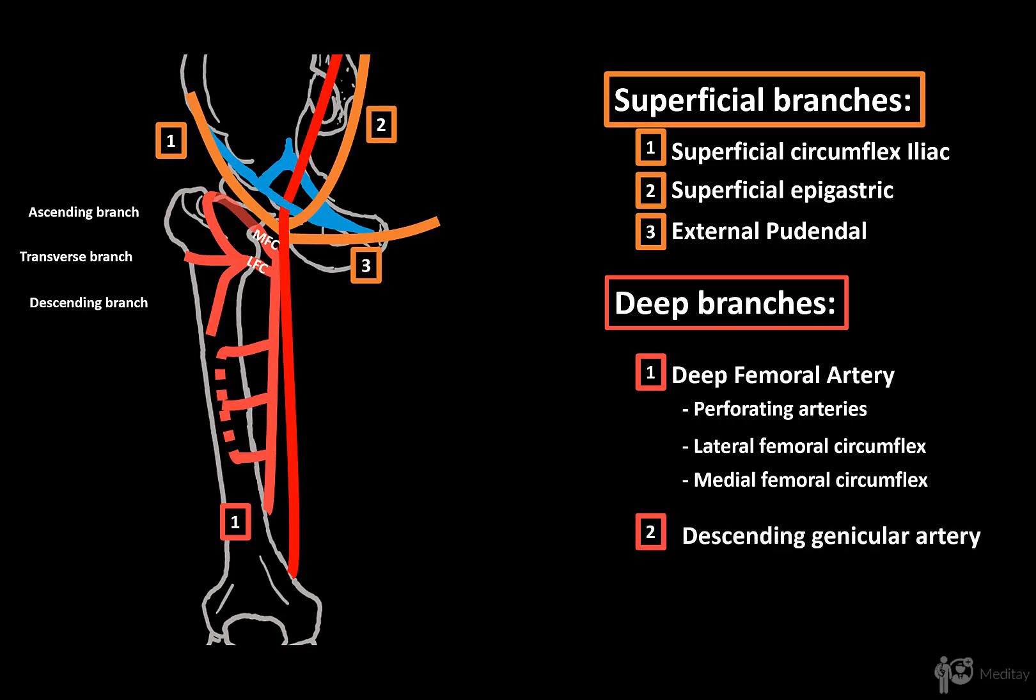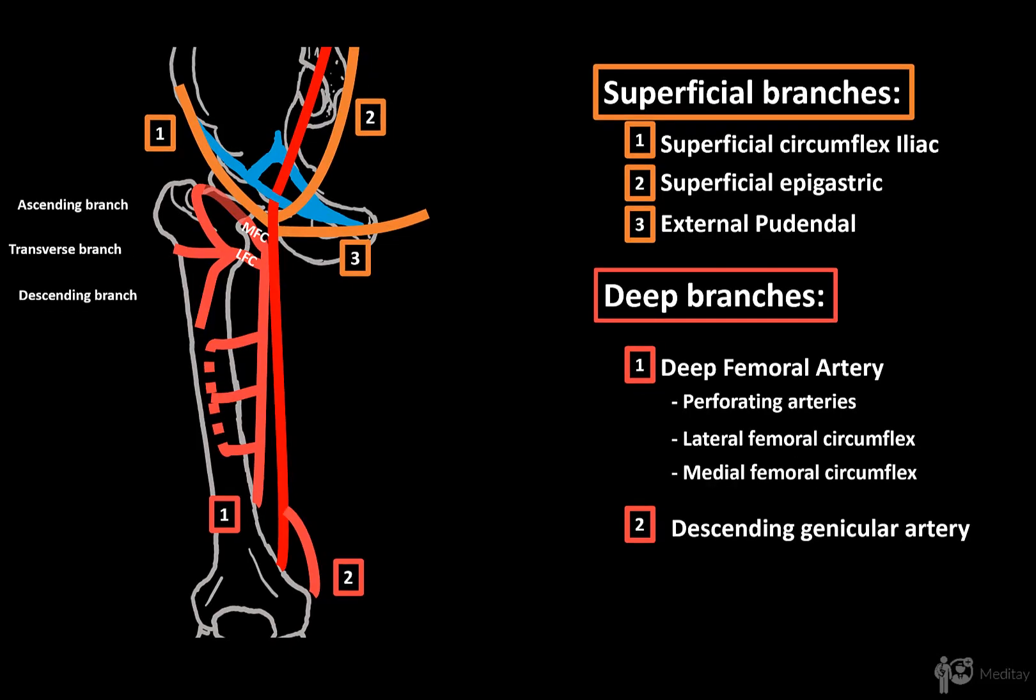Lastly, there's the descending genicular artery, which descends towards the knee and takes part in forming the patellar network to supply the knee joints. So that was all I had for the femoral artery. My next video will be about the arterial blood supply of the knee.